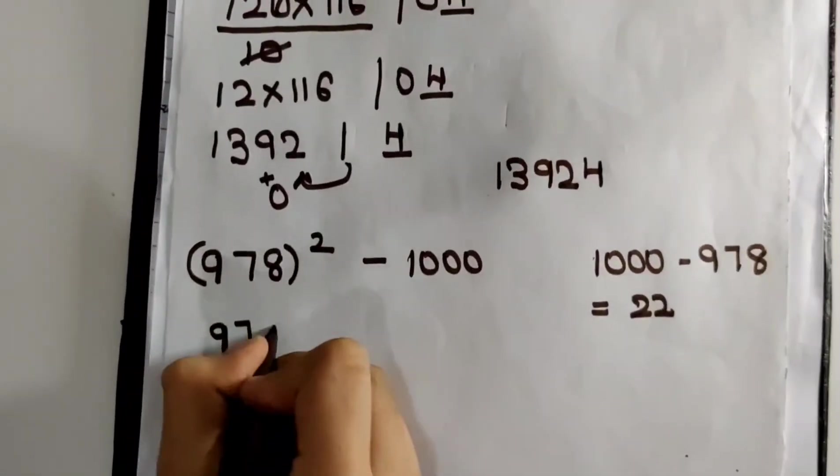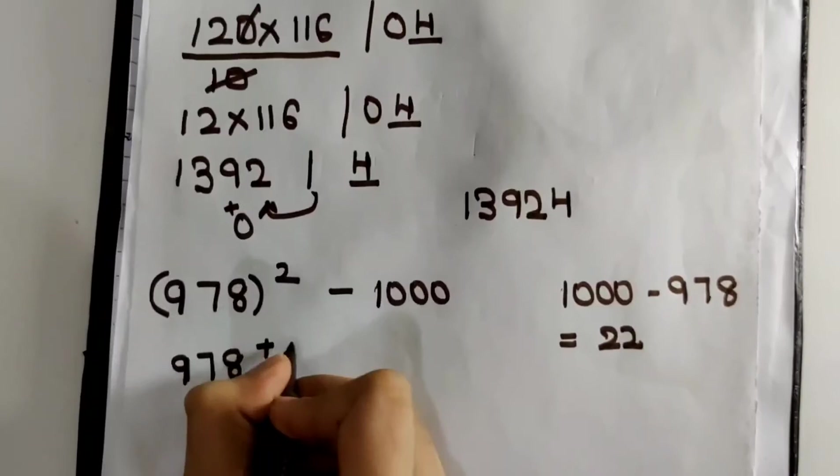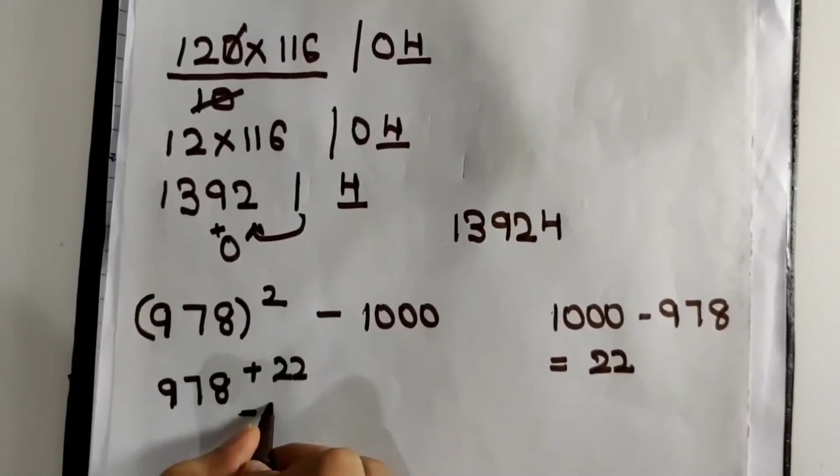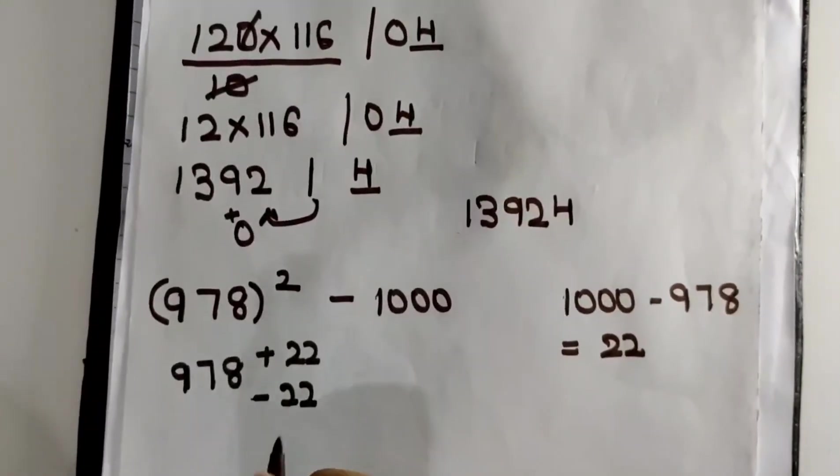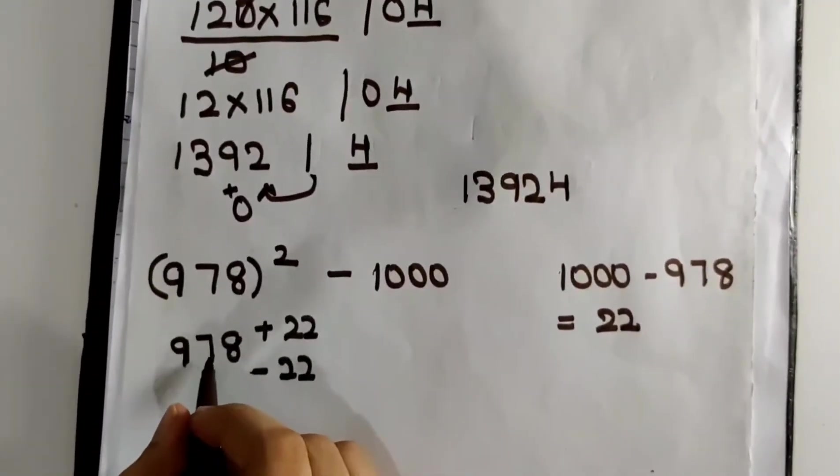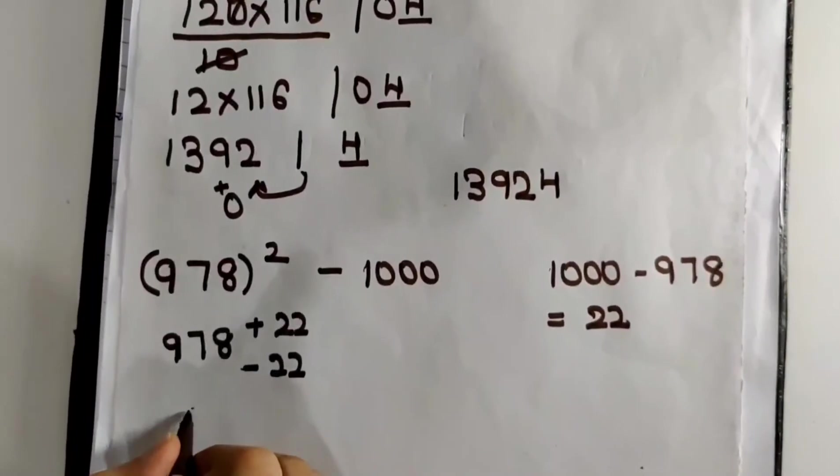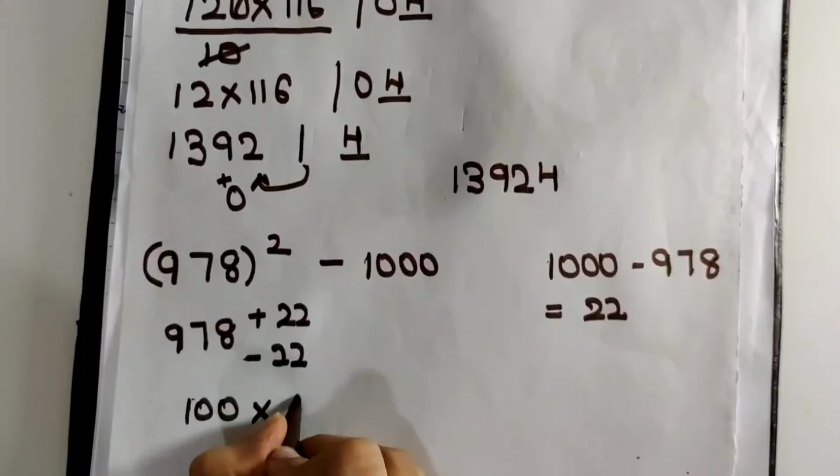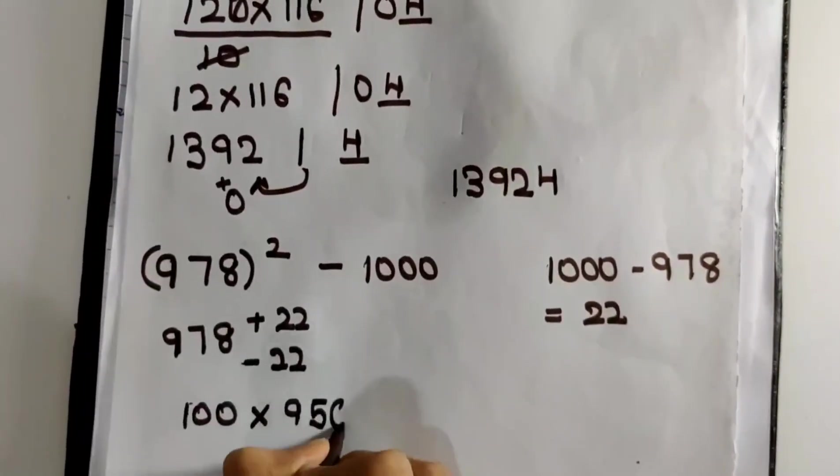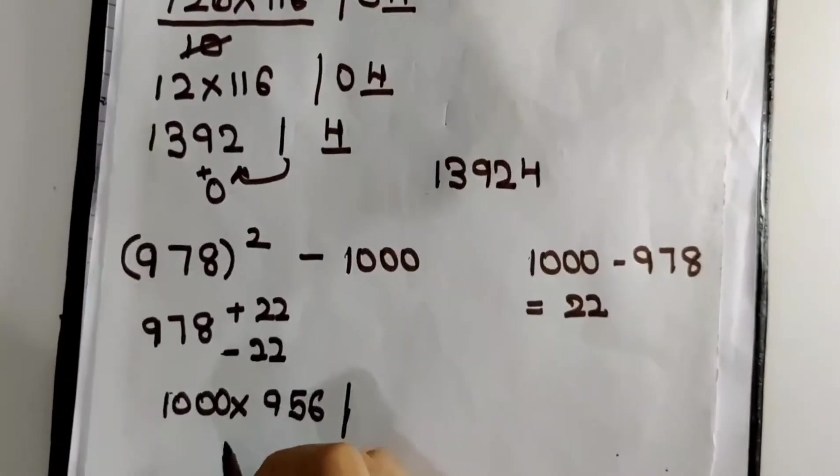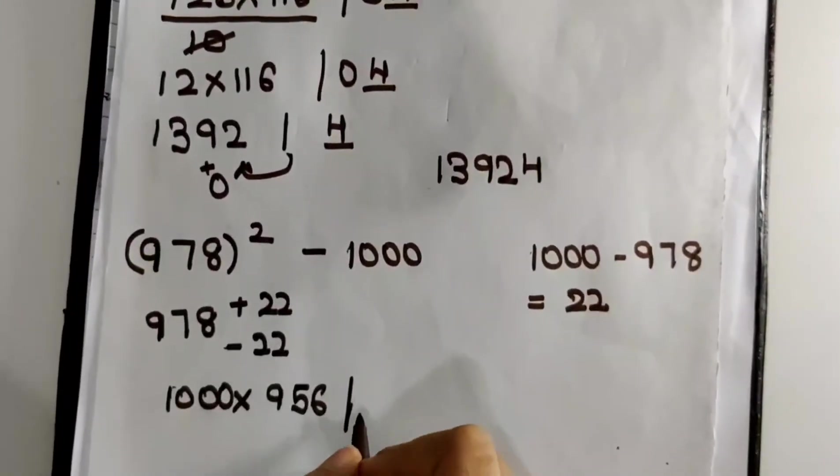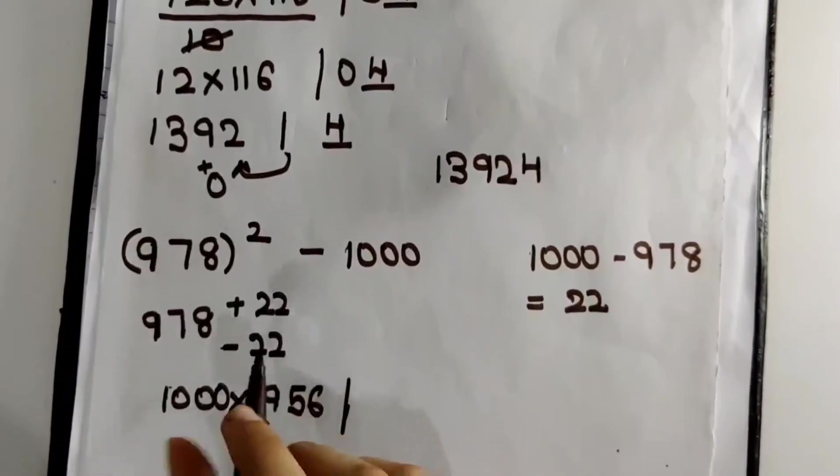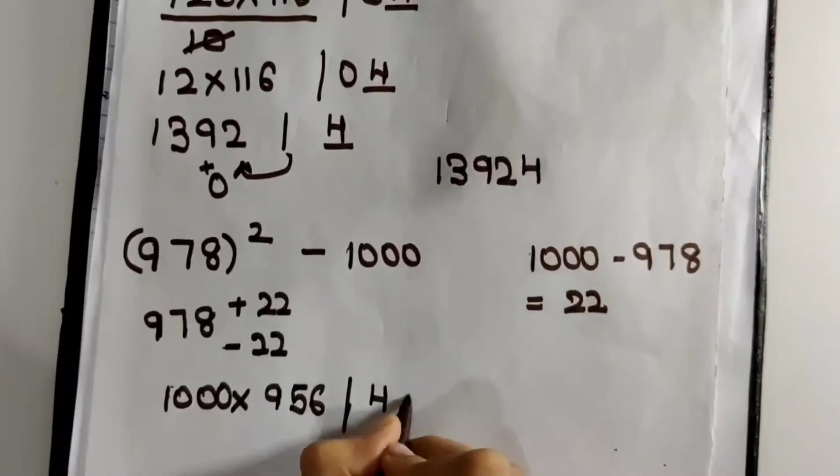1000 minus 978 is nothing but 22. I will write 978 here. I will write plus 22 here as that is the difference obtained. The additive inverse of plus 22 is minus 22. Now I will multiply 978 plus 22, that is 1000, with 978 minus 22, that is 956. That was my left hand side. Now let us write the RHS, the right hand side. What I have to do is find the square of 22. That is nothing but 484.